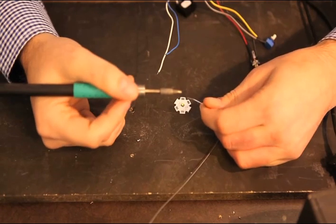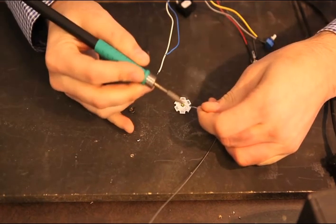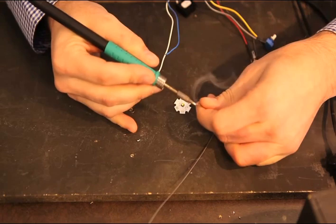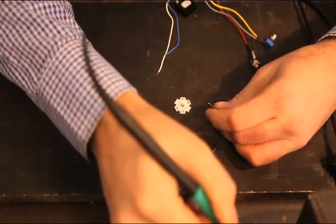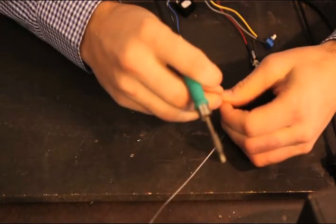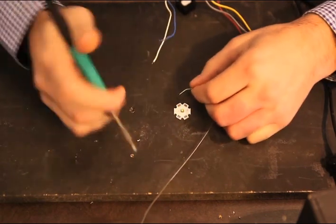Once the soldering iron is up to temperature, tin the iron by placing a small amount of solder on the tip of your iron. Wipe away the excess on a damp soldering pad or sponge. This preps the surface and allows the solder to flow easily onto the other surfaces.